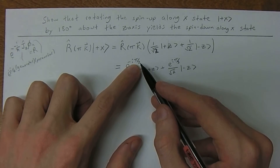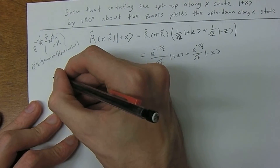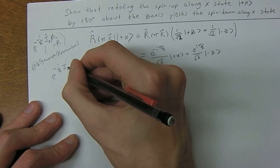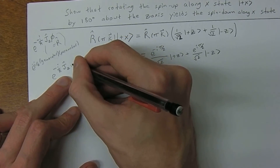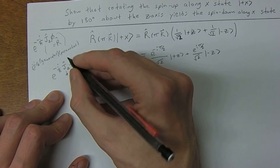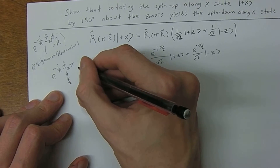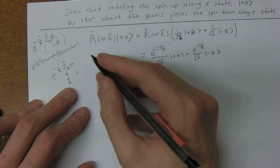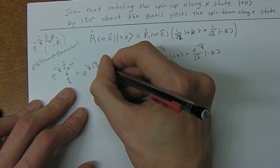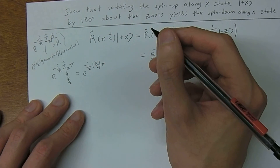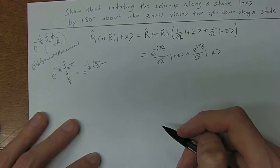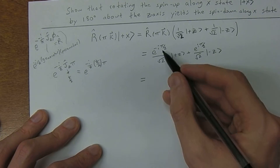To understand where this comes from: e to the negative i over h-bar times jz, the generator of rotations, times pi. For the plus-z eigenstate, jz returns positive h-bar over 2, so we get e to the negative i over h-bar times h-bar over 2 times pi, which gives e to the negative i pi over 2. For the minus-z eigenstate, jz returns negative h-bar over 2, giving the opposite sign.